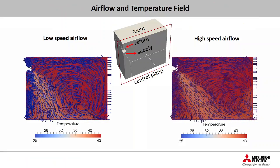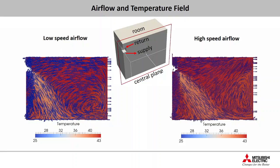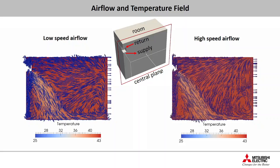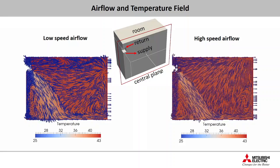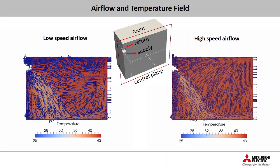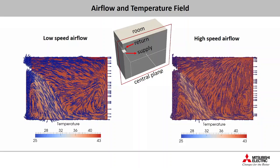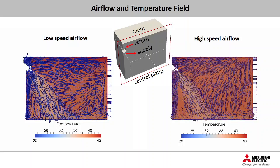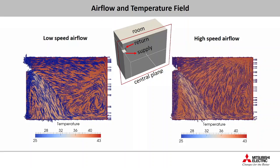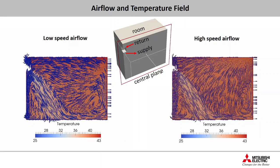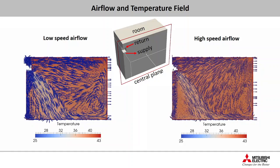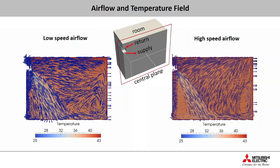We can also look at the animations that show the airflow and the temperature field on the central plane of the room while the air conditioner is in pull-down operation, so that we can better understand how airflow movement can affect the thermal behavior of the system. The animation on the left is for the low-speed airflow case, and the animation on the right is for the high-speed airflow case. The blue arrows represent airflow direction, while different colors represent different air temperatures. The air comes into the room through the supply vent and leaves through the return vent. Because the airflow dynamics will affect the operation of air conditioning, we need to feed the cycle models with the return air state and update the supply air state during the co-simulation.